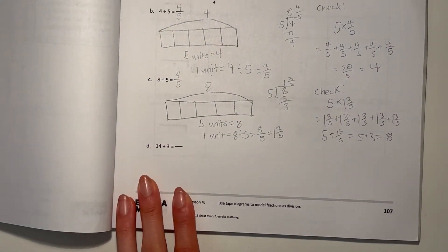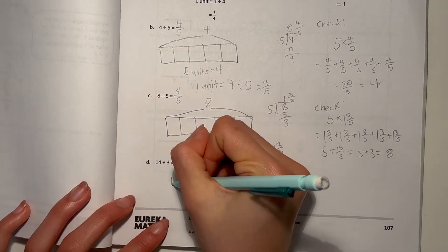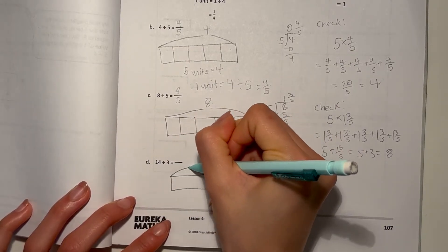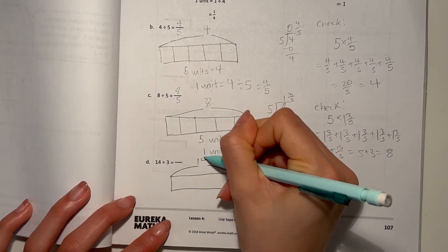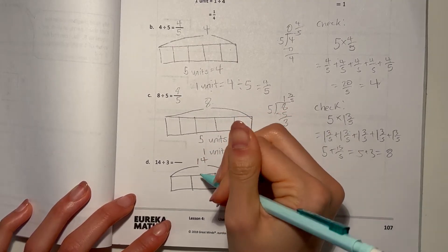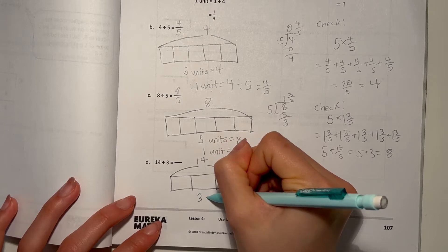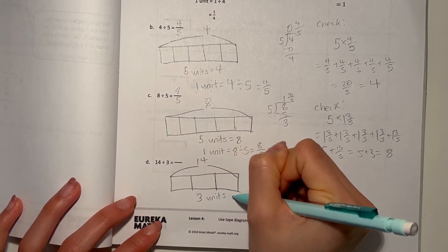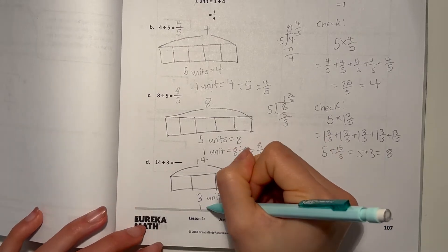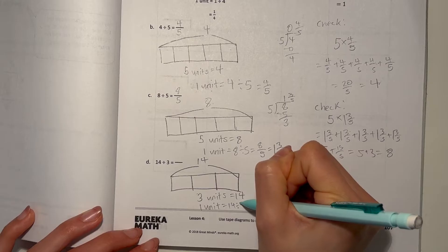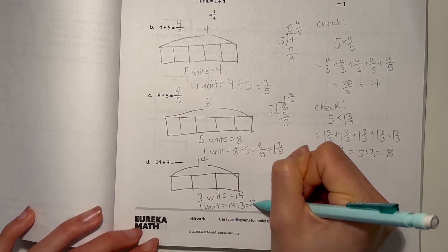D, we have 14 divided by 3. That means our whole would be 14 divided into 3 pieces. That means 3 units is 14. That's our whole. So 1 unit is 14 divided by 3, which is 14 over 3.